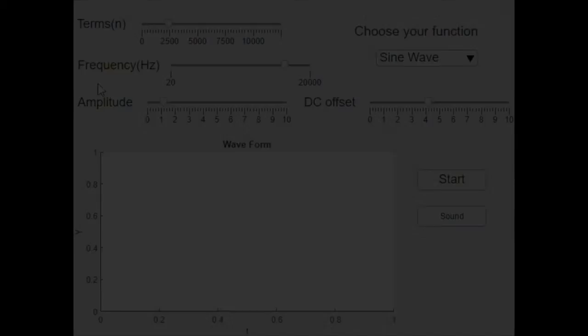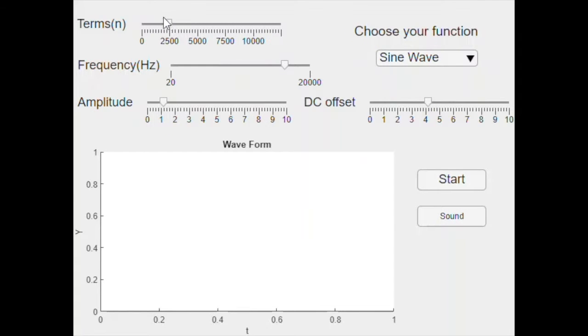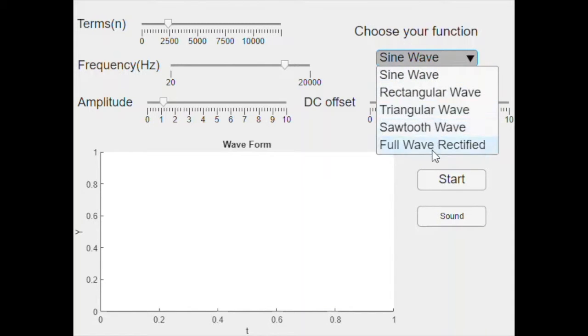Here is our final project. And it is an arbitrary function generator. We can see that there are four slides, a drop-down button, and two start buttons. And the drop-down button shows that we have five types of functions we can choose: sine wave, rectangular, triangular, saw tools,